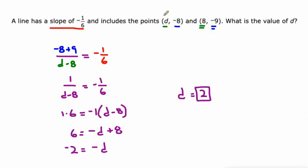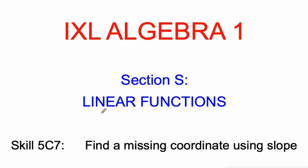So, if this point is 2 negative 8 and this point is 8 negative 9 then the line that runs through those two points would have a slope of negative 1 sixth. So, that's how you can use the slope formula to find a missing coordinate. Good luck.